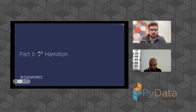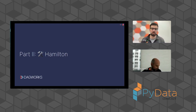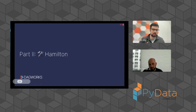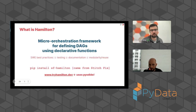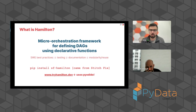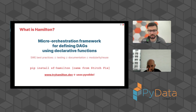In part one we talked about the mental model and justified why DAGs are a really good abstraction. In this part, we're going to talk about some tooling that can help you get started with DAGs — the tool we created called Hamilton and how you can use it to represent both ML and LLM pipelines. Hamilton is a micro-orchestration framework for defining DAGs using declarative functions. The whole goal is to give you software engineering best practices and make them easy — build highly testable, self-documenting pipelines that are modular and encourage reuse. It's open source, installable from PyPI as sf-hamilton, and you can try it at tryhamilton.dev.